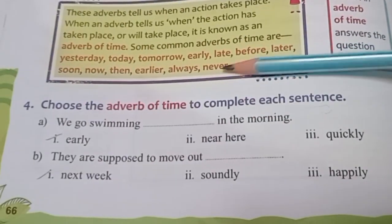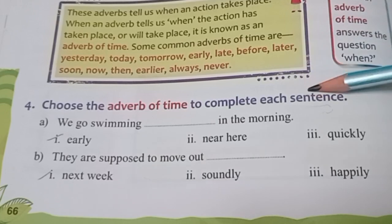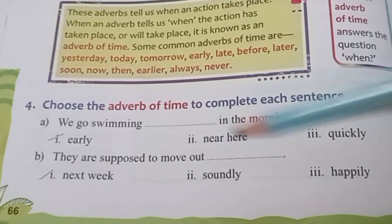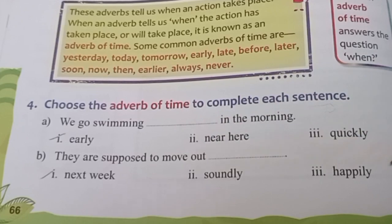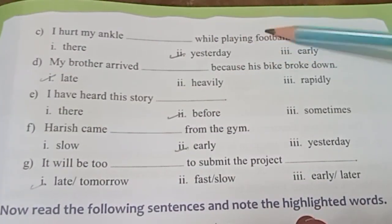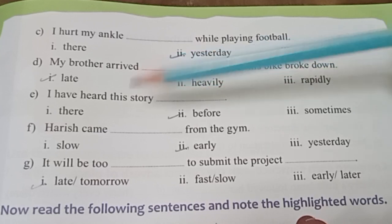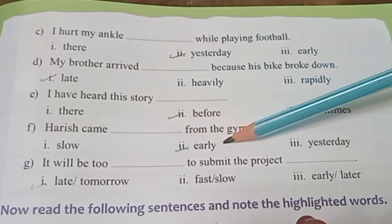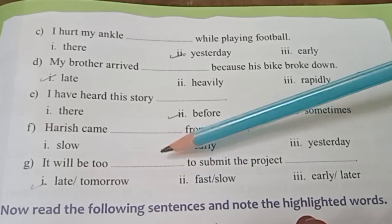Exercise 4: Choose the adverb of time to complete each sentence. For A, the adverb of time is early. For C, it is yesterday. For D, it is late. For E, it is before. For H, it is early. For G, it is late or tomorrow.